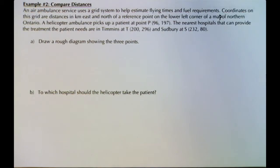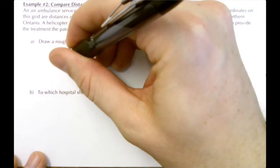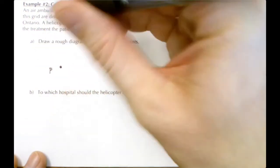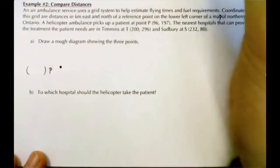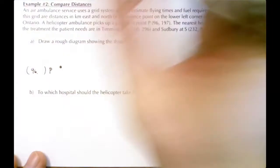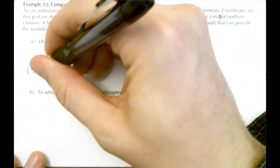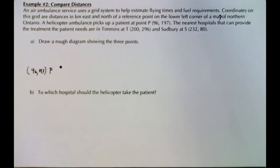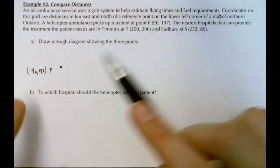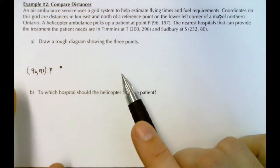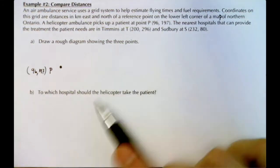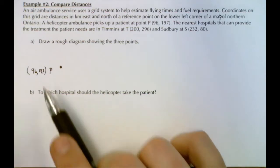The nearest hospitals are in Timmins or Sudbury. Let's draw what this might look like. Let's start by putting point P here, and the coordinates of point P are (96, 197). If we had a graph we could actually graph these points. We're just going to use relativity.